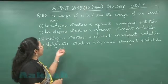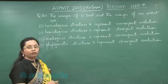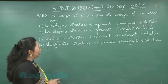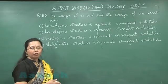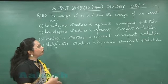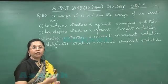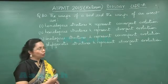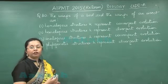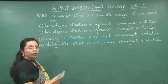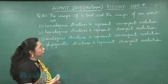Question 110: Wings of a Bird and Wings of an Insect. In the case of a bird, the wings are modified from the forelimbs, while in insects they are simply epidermal outgrowths. So that means they have different origin, and that is why they would be analogous structures.